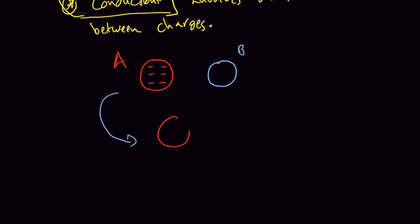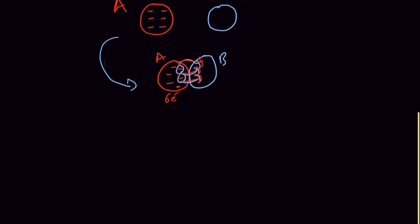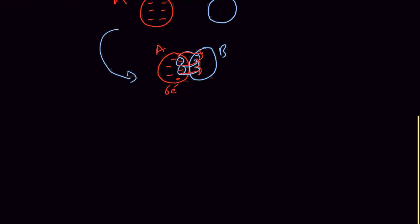What I'm going to do now is bring those charges into contact — charge A in contact with charge B. What's going to happen is the charges close to the barrier are going to jump to B. If both charges A and B are equal in size and identical in dimensions, they're going to split the charges equally. So if we have six extra electrons in A, three of those electrons are going to jump to object B.